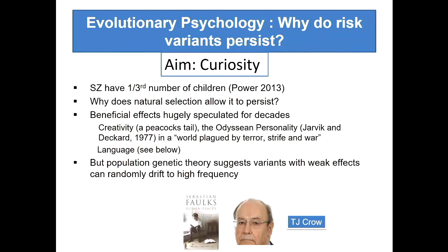Those are the exciting theories people can argue about till the cows come home - and as far as I can see, there's very little way of showing they're true. There's a really boring theory that actually these genetic effects can remain common just by random chance. Although having schizophrenia itself has a strong negative pressure on you, most people who carry these risk alleles - which is all of us - are not subject to this, and things can drift to become common by chance. So that's the boring theory.